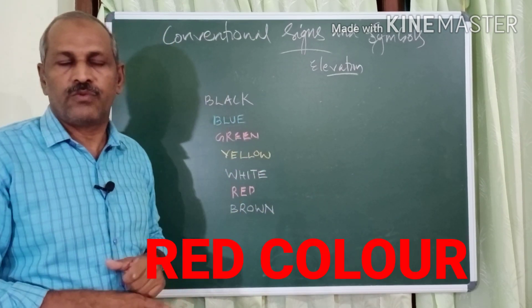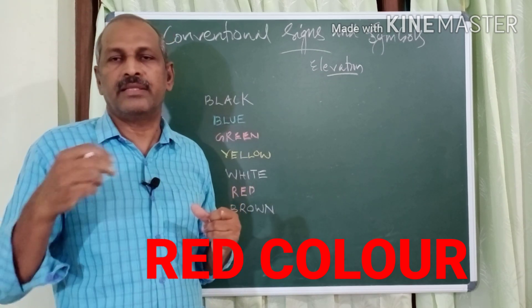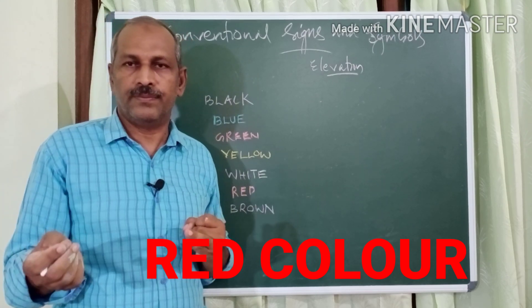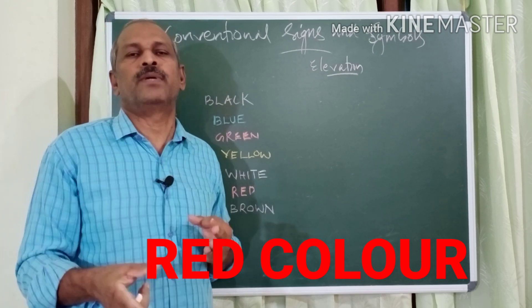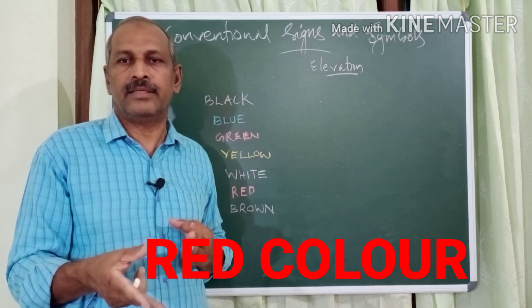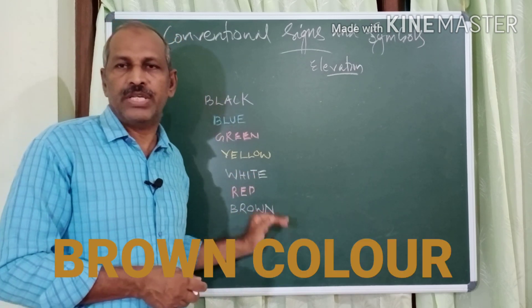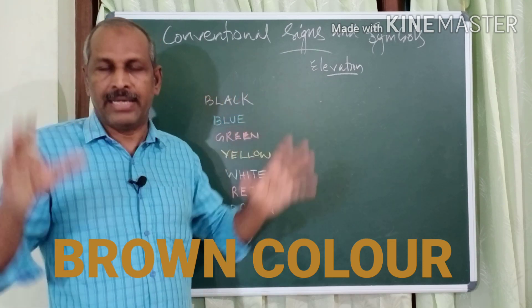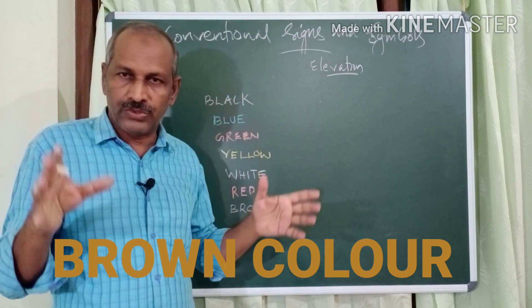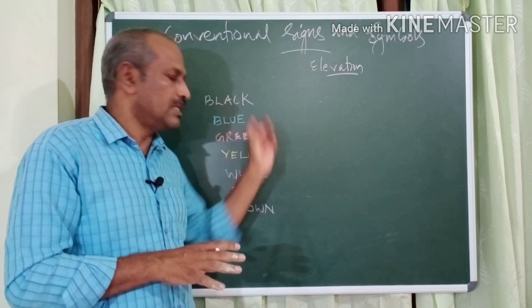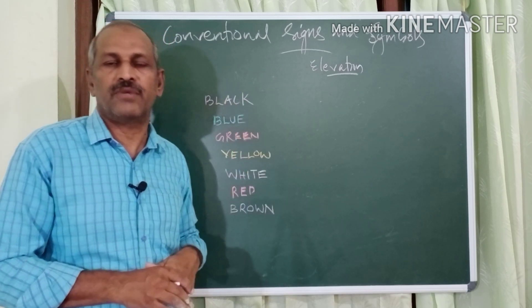Red is used for the grid — that is, eastings and northings values — and all types of roads including metalled road, unmetalled road, footpath, cart track, and bridges. Brown is used for contour lines, form lines, and sand dunes. These are the different types of colors used in the topographic map.